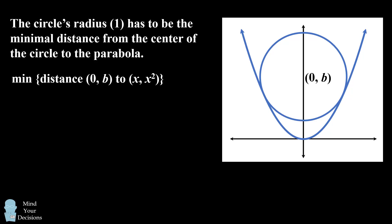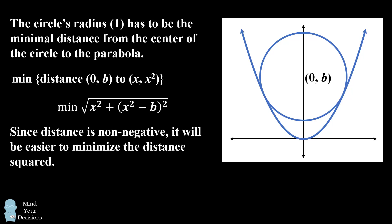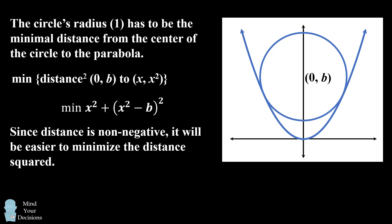We'll minimize the distance between the center of the circle and the parabola. A point on the parabola y equals x squared will have the form (x, x²). Using the distance formula, we want to minimize the distance function. Since distance is non-negative, it will be easier to minimize the distance squared. This will allow us to get rid of the square root, so it will be easier to take the derivative and find the correct value of b.